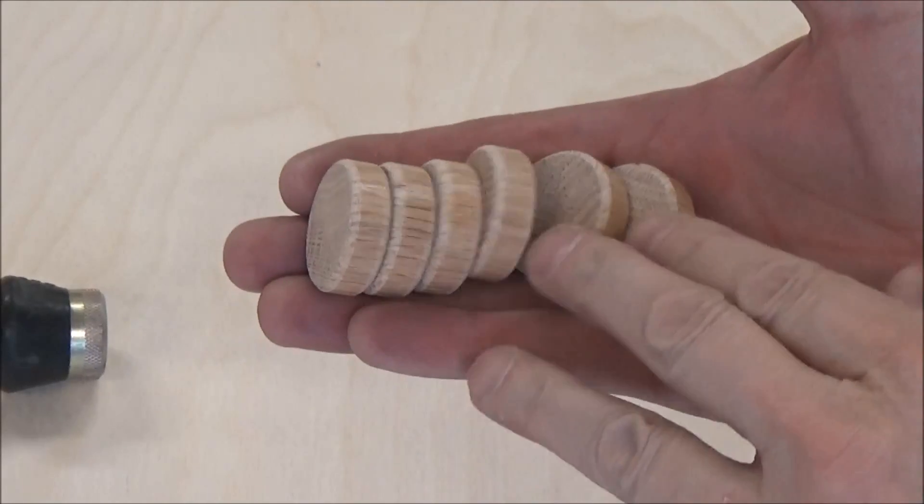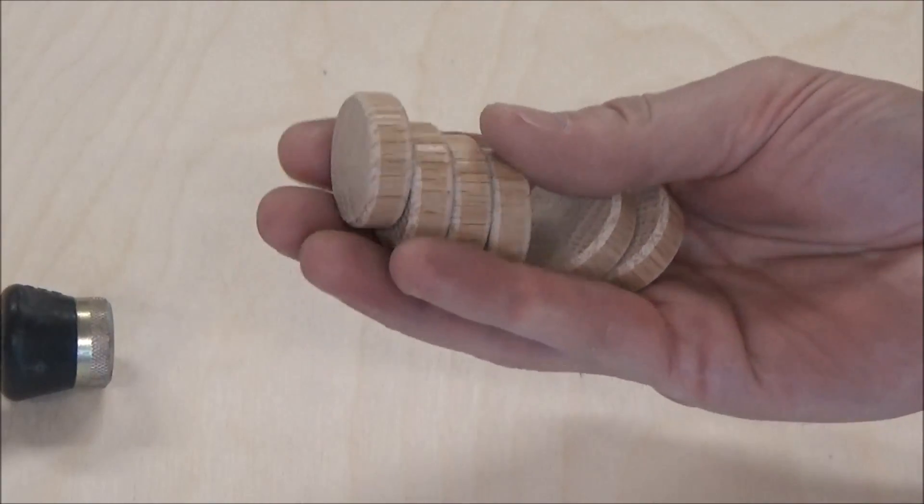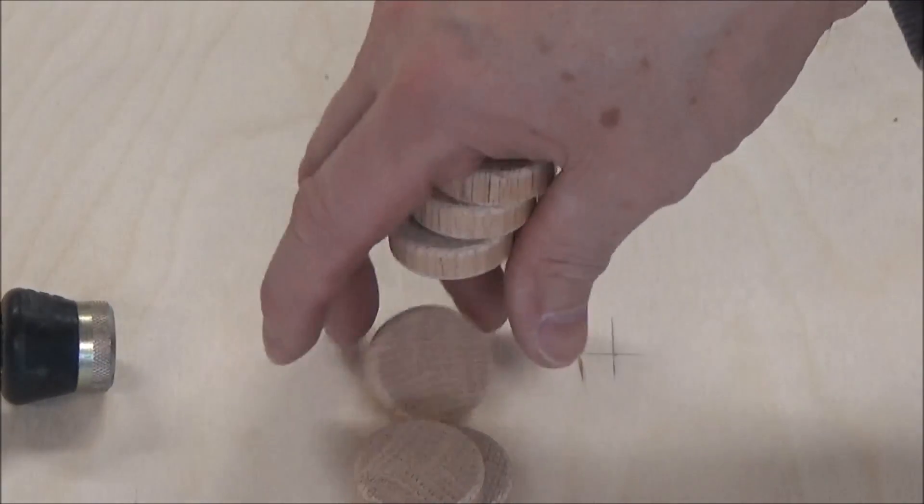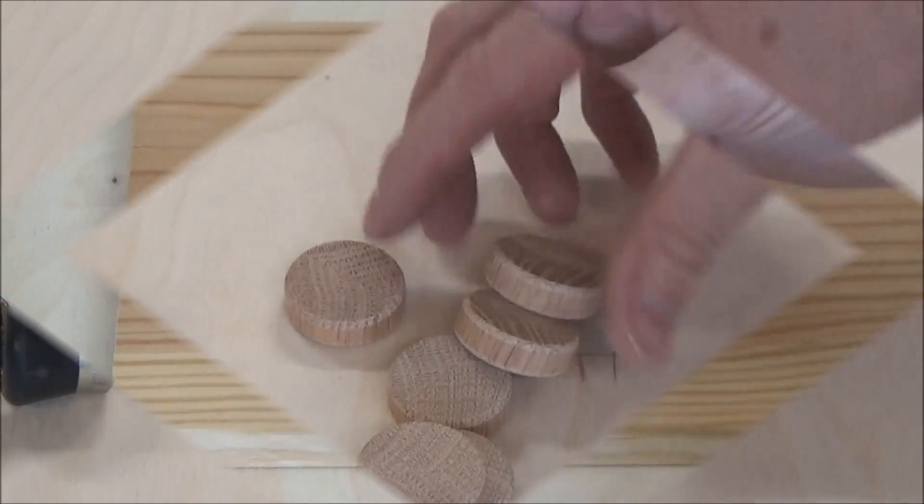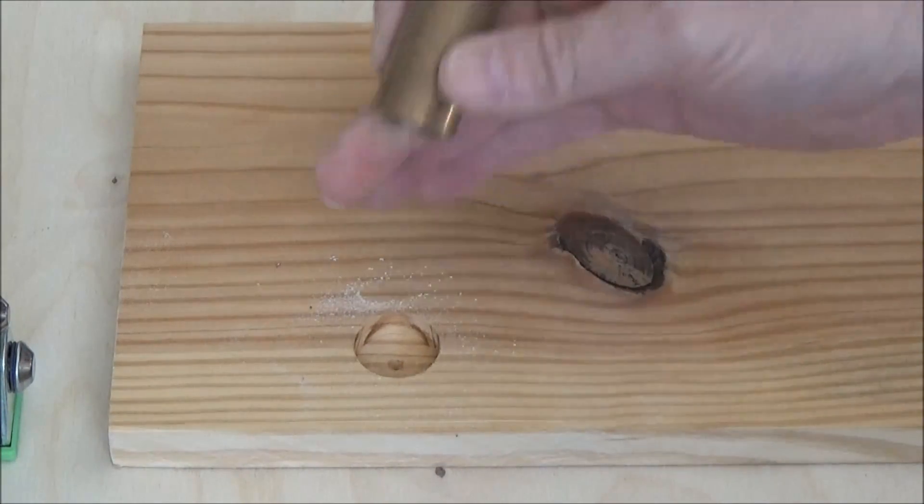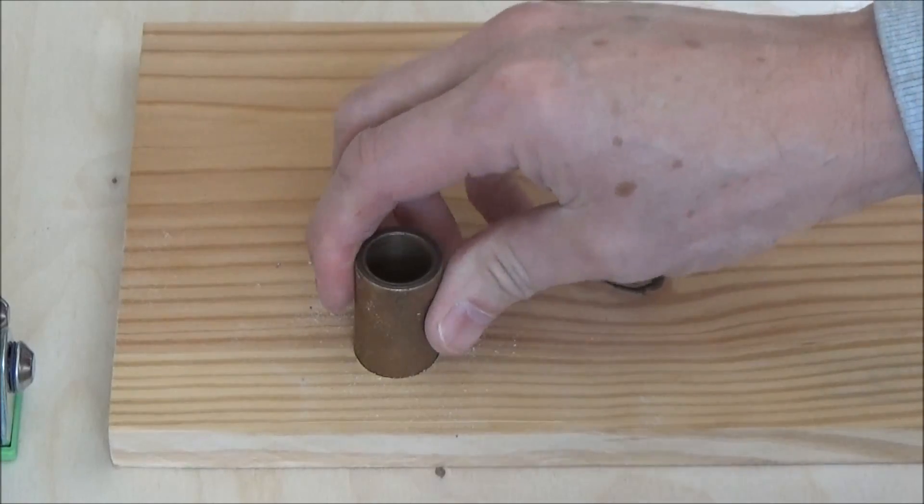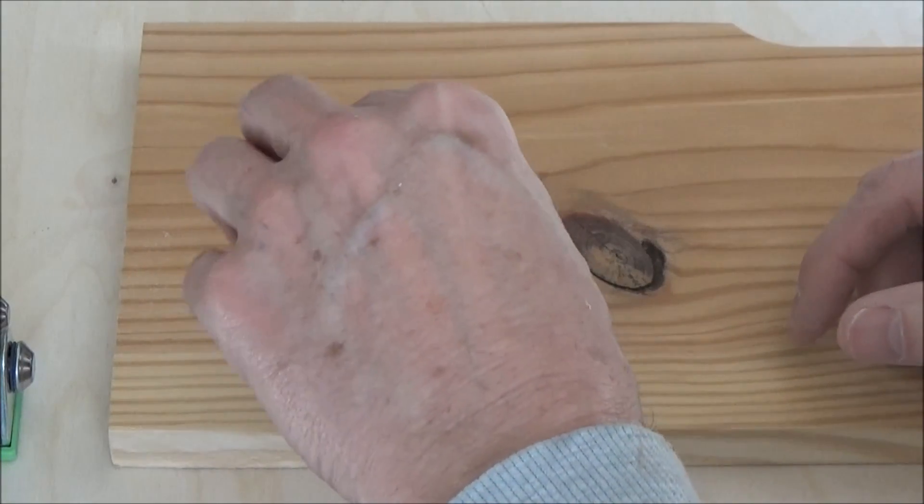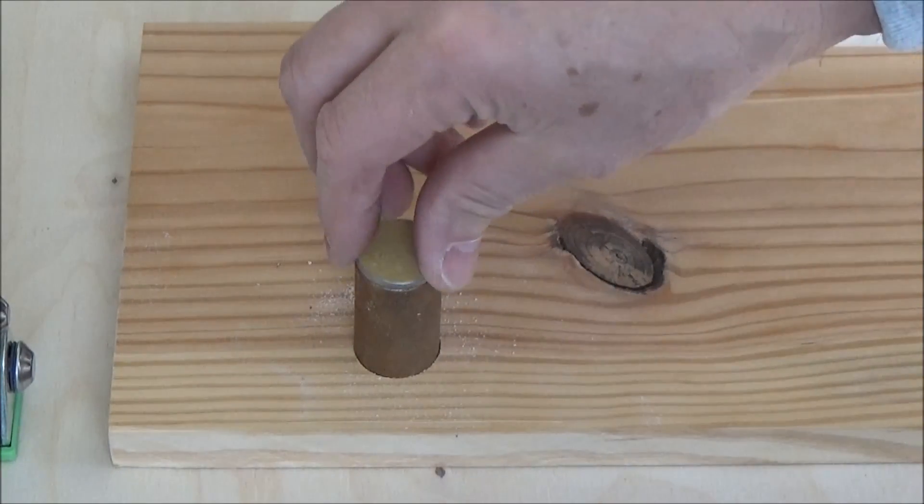There you have it. They look pretty good. So I had this one-inch bushing, bronze bushing, in my drawer.